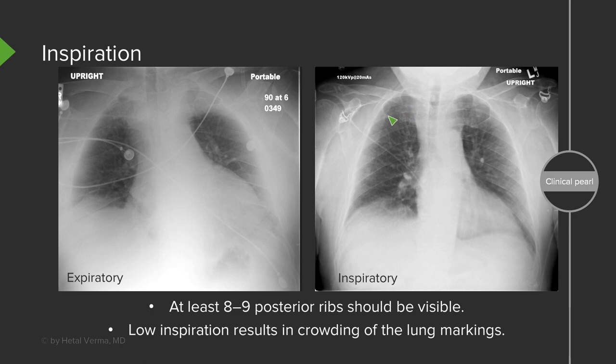A low inspiration results in crowding of the lung markings. Comparing this expiratory film versus the inspiratory film, you can see crowding of the lung markings. The lung volumes look much lower on the expiratory film, and everything just looks very hazy. So oftentimes it's difficult to detect an abnormality on a patient that doesn't have a good inspiration.